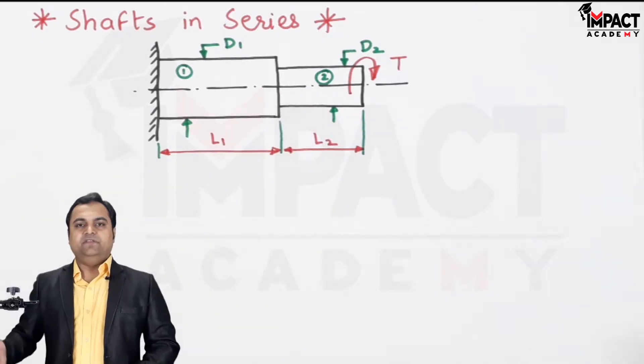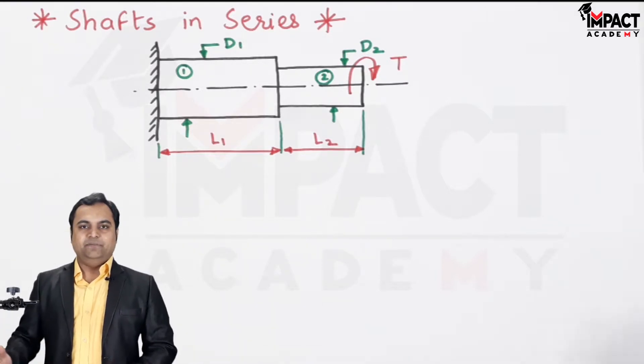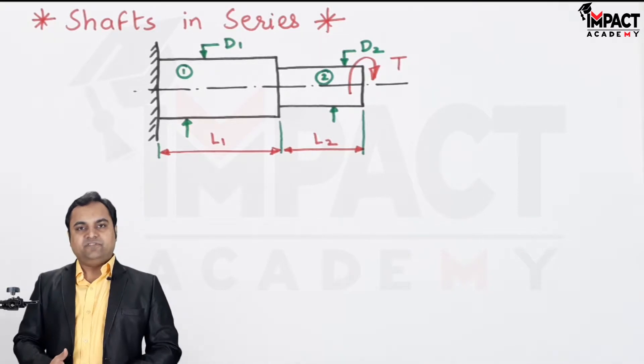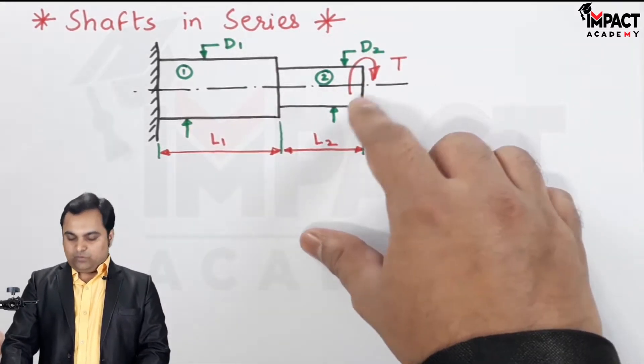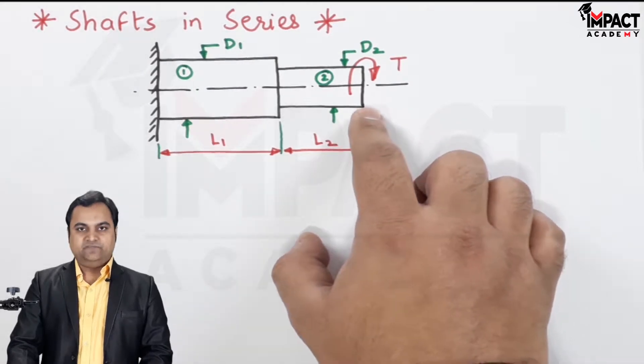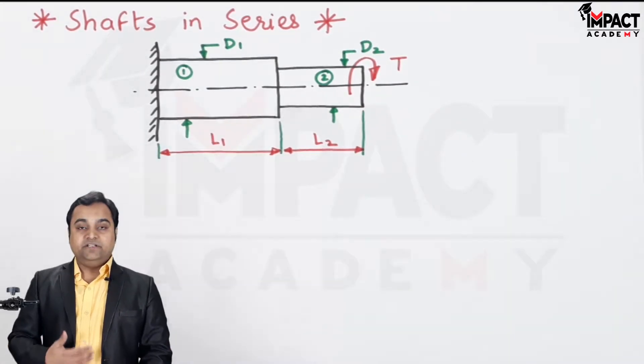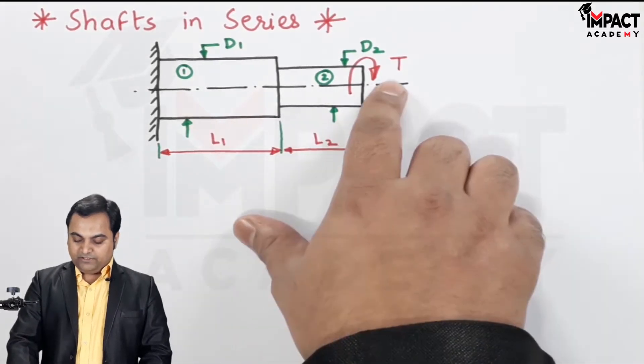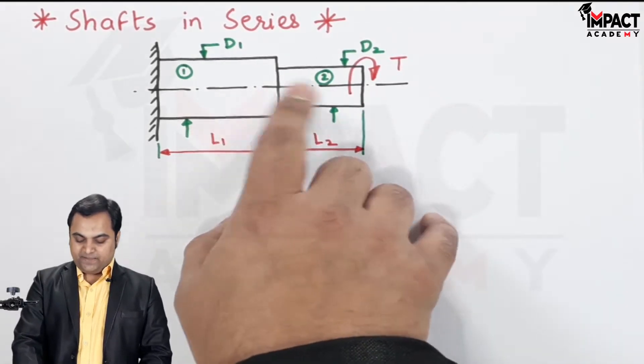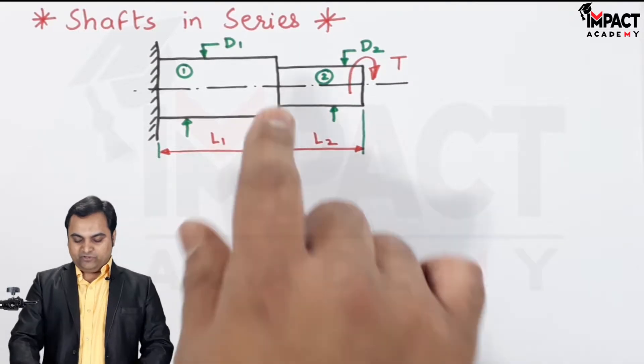Similarly, we can have a number of shafts in series depending upon their length and diameters connected together. So when we have shafts in series and a torque is applied at one of the ends for this shaft, the conditions for shafts in series are that the applied torque would be same for both the shafts.